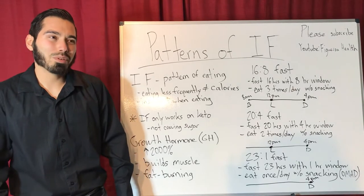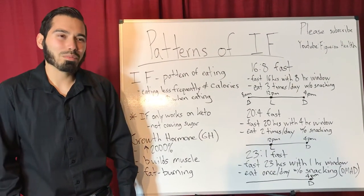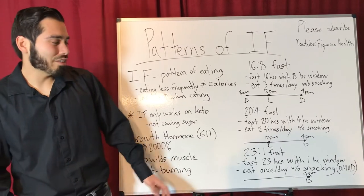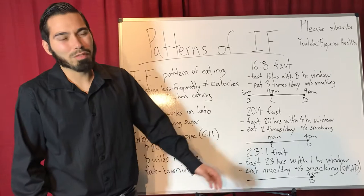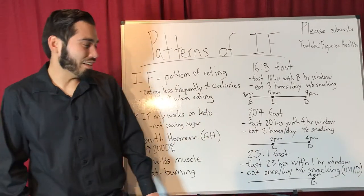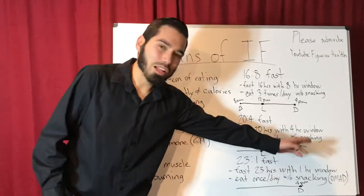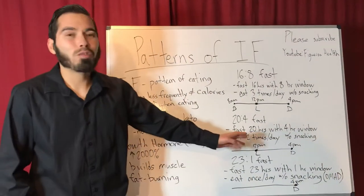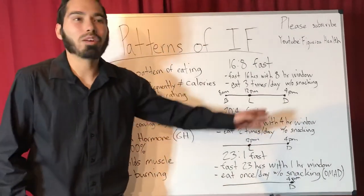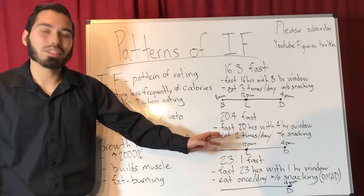For example, someone wakes up in the morning not hungry at all, and then at lunchtime they're still not hungry. They remain fasted until dinnertime, say around 4 p.m., when they finally eat. After that, they don't eat anything until the following day around 4 p.m. — so that's a 23 hour fast with a one hour eating window.